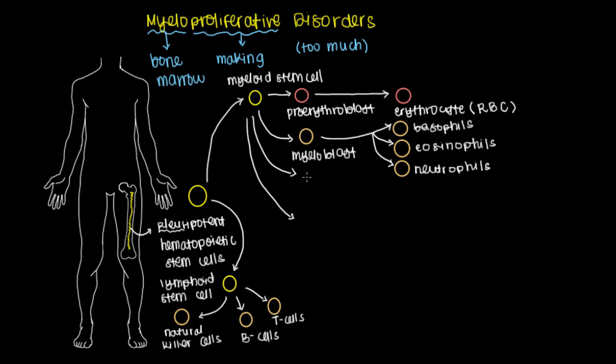Another lineage that you can have dividing off of the myeloid stem cell is through the monoblast, which you may be able to guess will divide into a monocyte.